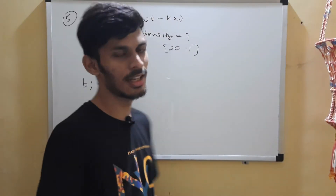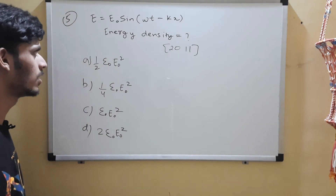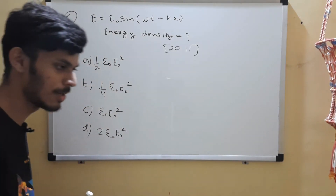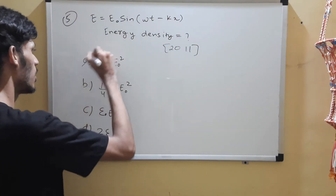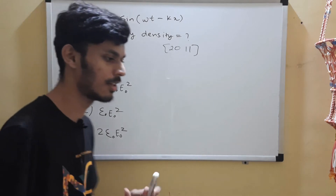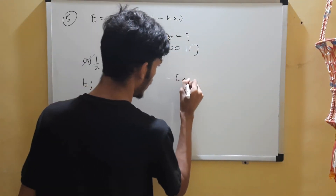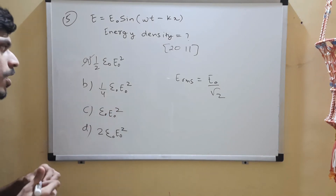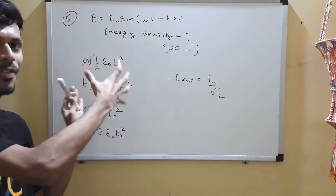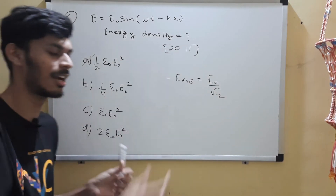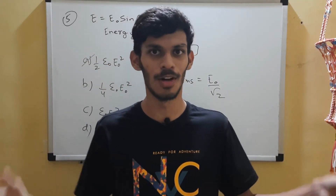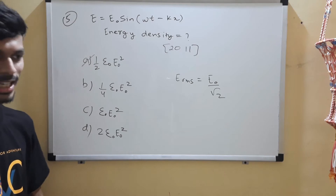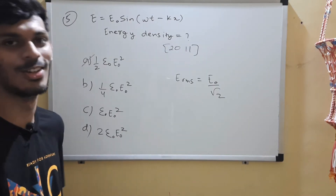Question 5: given the equation of an electromagnetic wave, you are asked for the energy density. They are essentially asking for the formula. The formula is half epsilon naught E naught squared. Some of you might remember it in terms of E_RMS — just convert using E_RMS = E naught divided by root 2. Note: one-quarter epsilon naught E naught squared is the energy density in the electric field alone, and one-quarter is in the magnetic field; together they give half epsilon naught E naught squared as the total energy density.